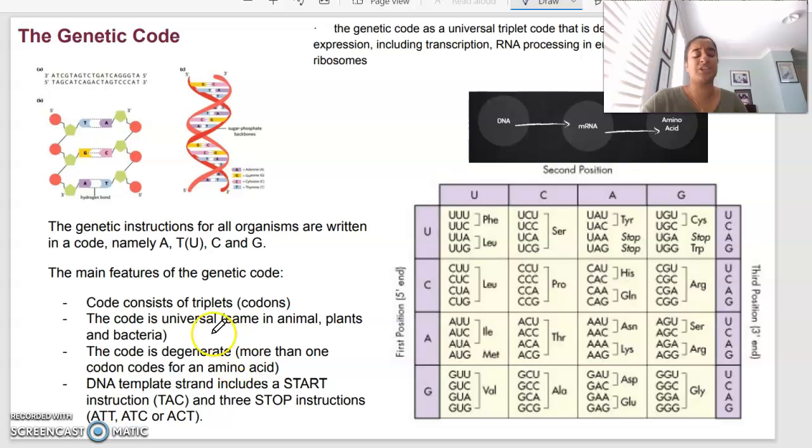We also said that the code is degenerate. What that means is more than one codon can code for an amino acid. So if we look at serine here, UCU, UCA, and UCG all code for serine. So that is degenerate.